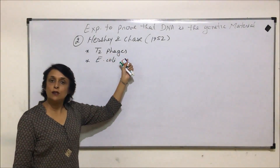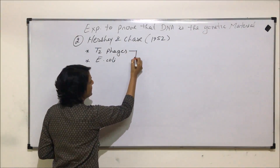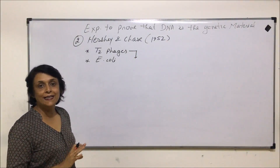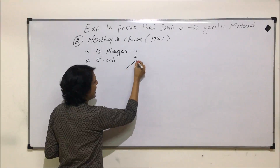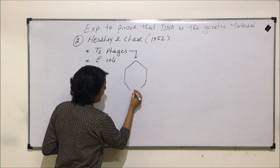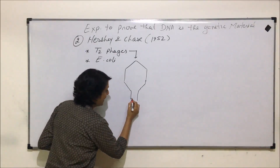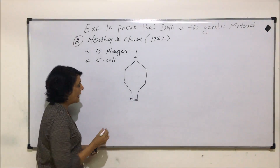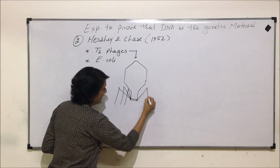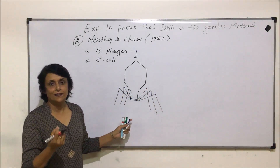Now, let us first talk about the structure of T2 phages and then we will see what exactly they did. A T2 phage is actually made up of only two things: there is a protein capsid and DNA as the genetic material. The protein capsid is normally a polygonal sheath, and there is a middle piece. At the end there is an end plate, and attached to the end plate are structures known as the tail structures.